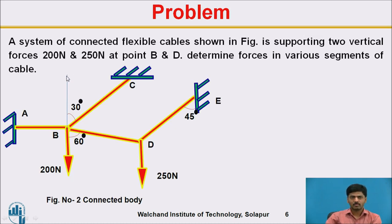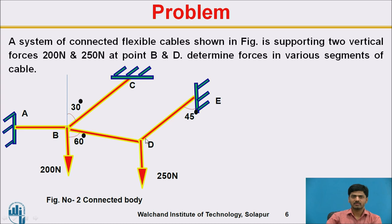Let's solve one problem. We just focus on this particular figure. A system of connected flexible cables, shown in the figure, is supporting two vertical forces: 200 Newton and 250 Newton at points B and D. Determine the forces in the segments of the cable — AB, BC, CD, and DE. The angles and forces are given; identify the forces present in these particular cables.